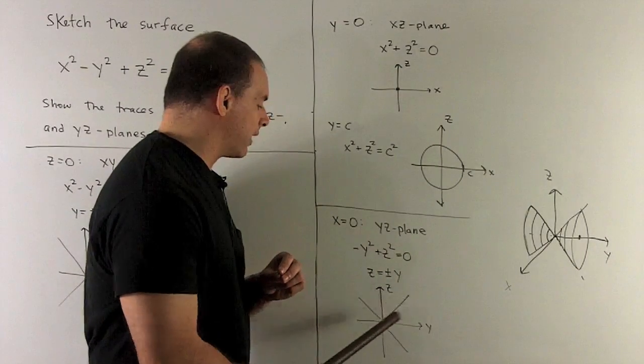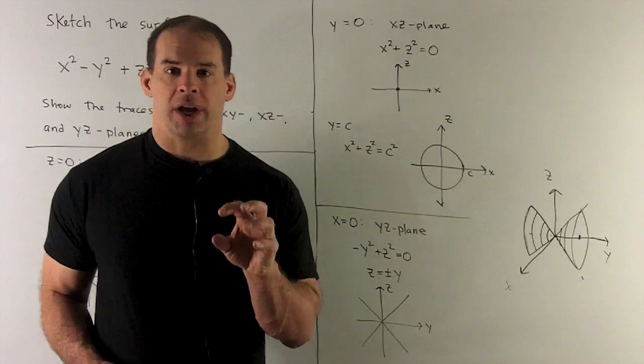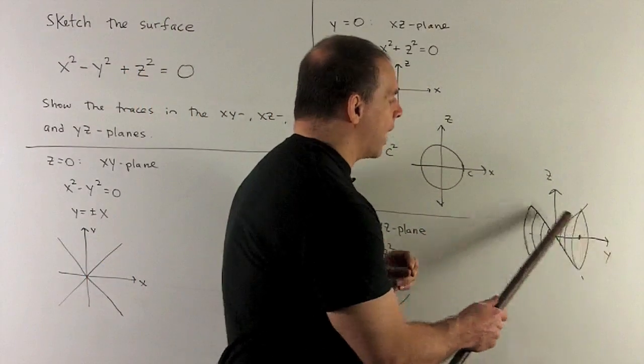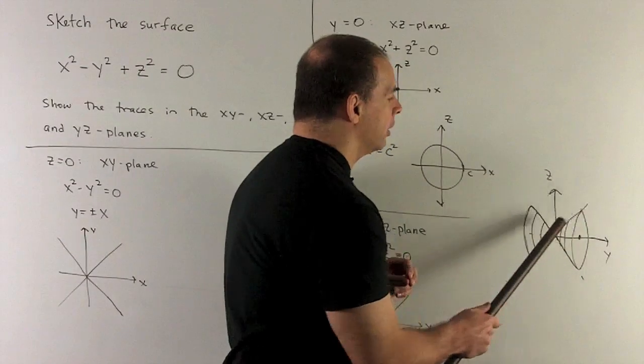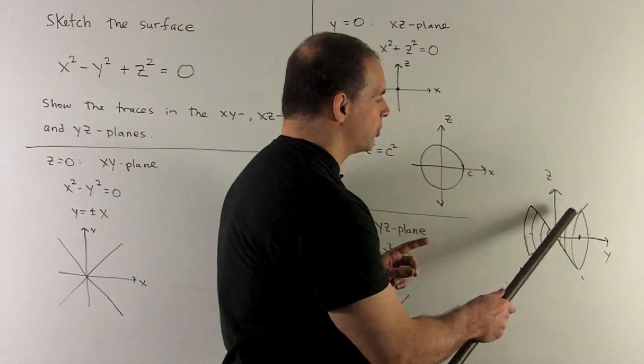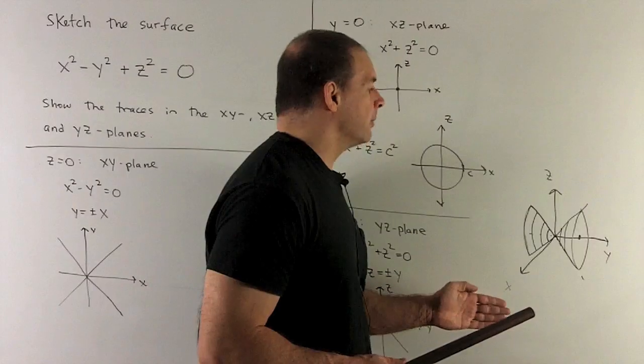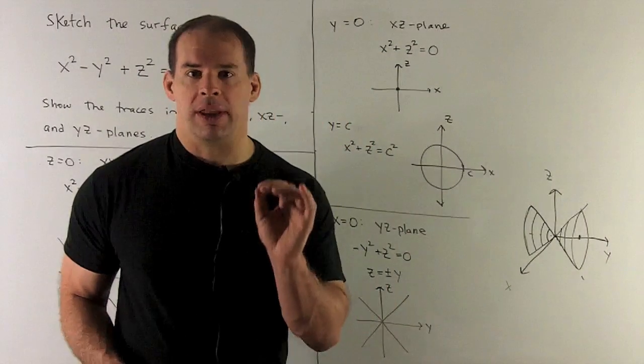Take our traces and put them together. We have a guideline in the yz plane: this 45-degree line, and then a 45-degree line on the other side. Once we have those, we can put these circles in the planes parallel to xz (that's y = c). We get the double nappe cone.